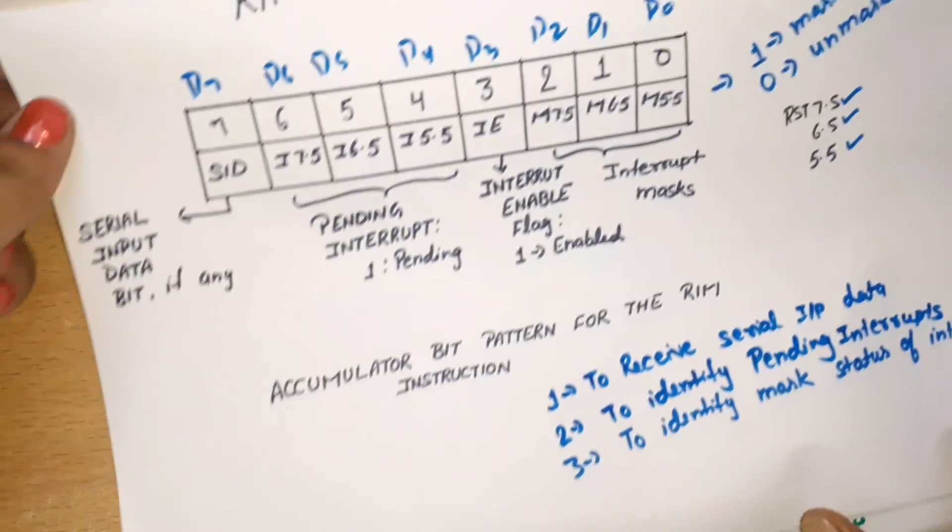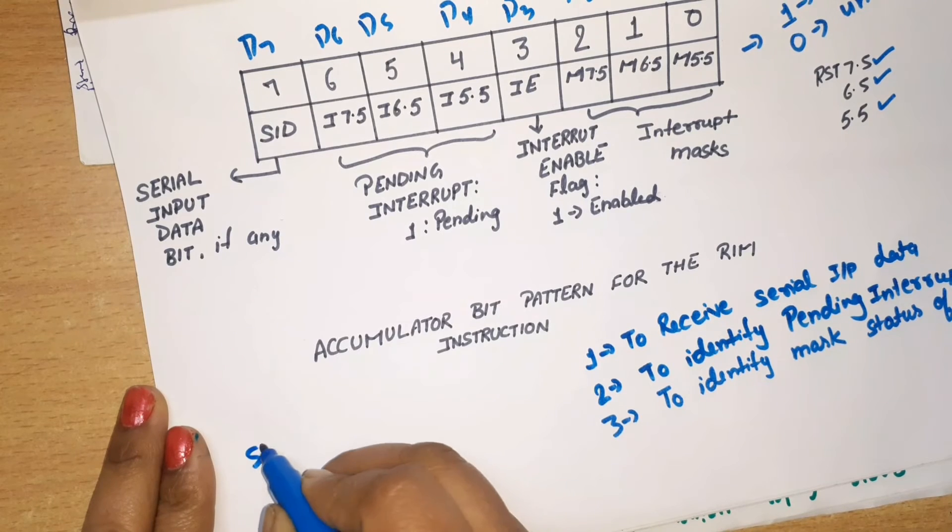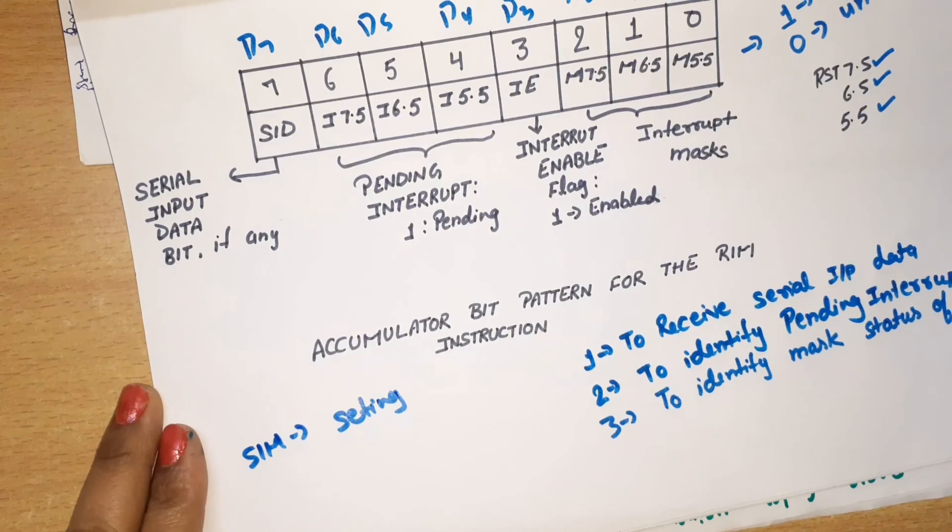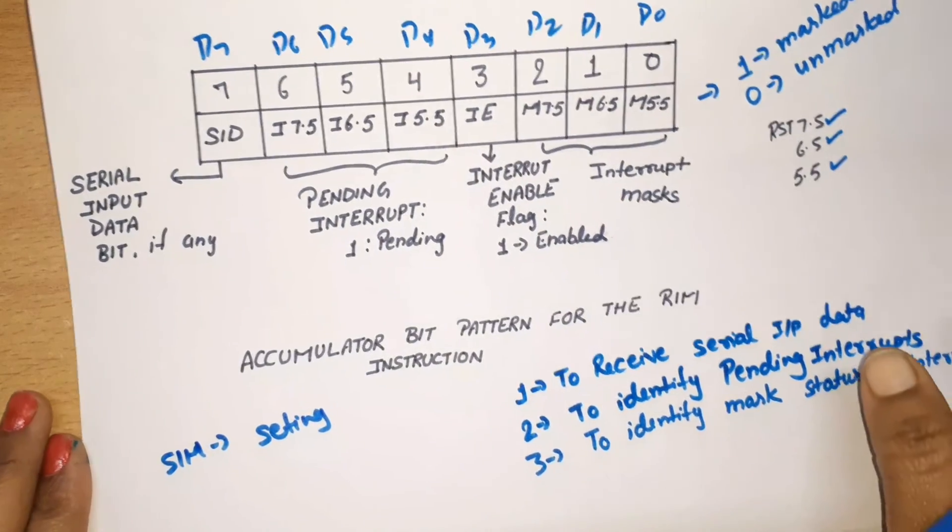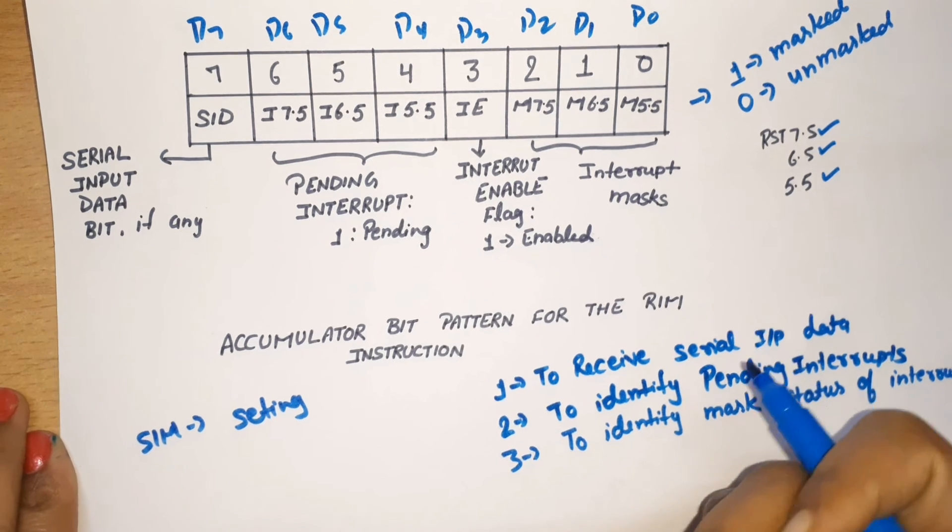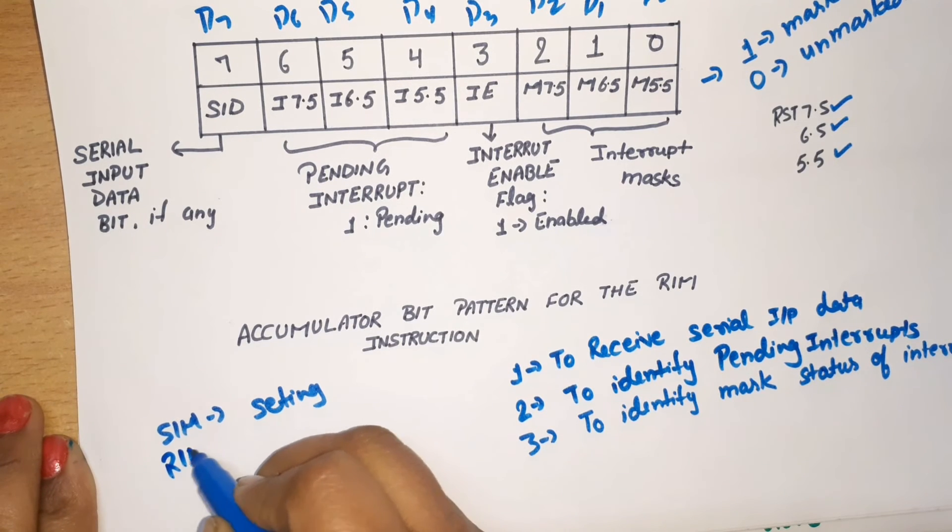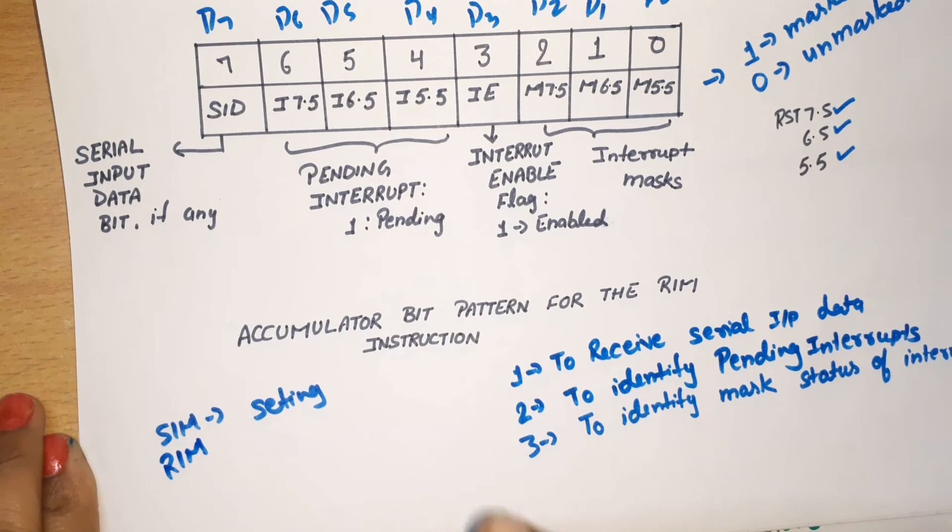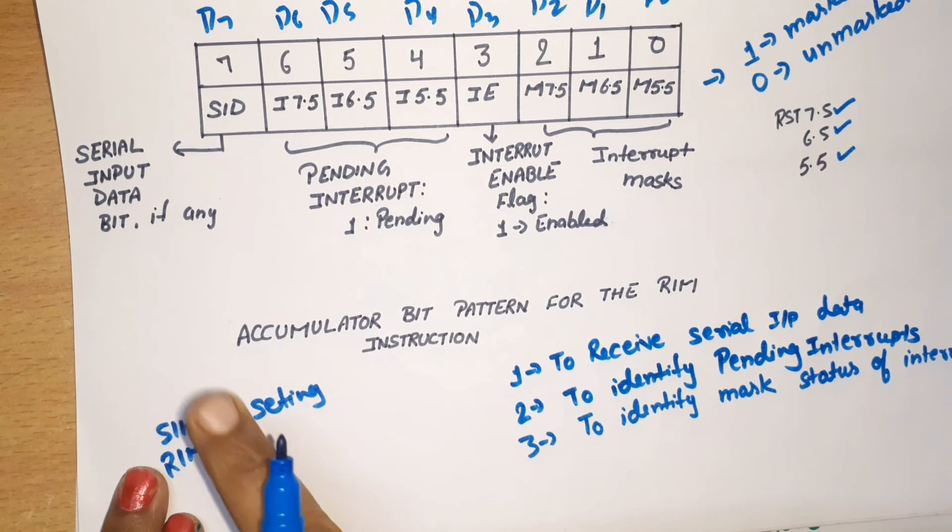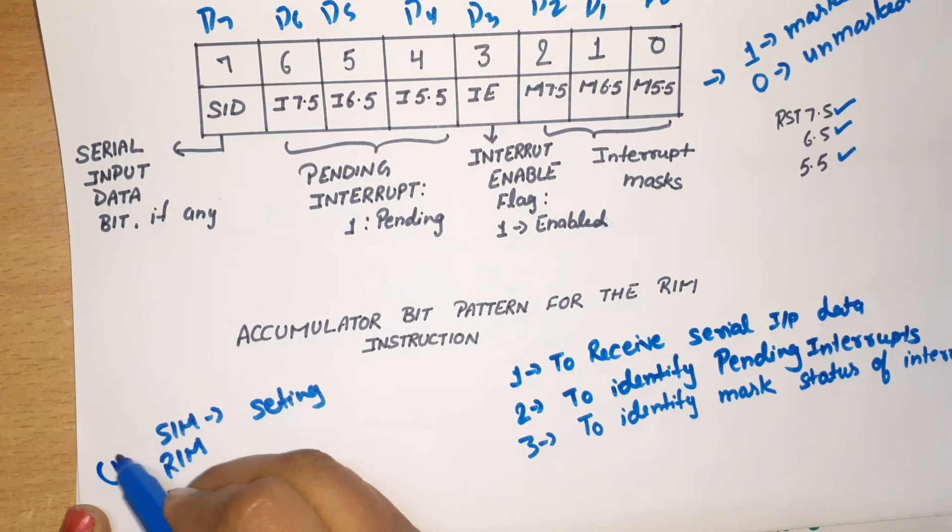Now what is the difference between SIM and RIM? SIM is used for setting. In SIM, the programmer feeds values according to their choice and masks or enables the respective interrupt according to their requirement. But in case of RIM, we don't mask or unmask. We check or read the status of our interrupts—whether they are in masked condition or unmasked condition. Here we check, in SIM we set. This is the first difference.